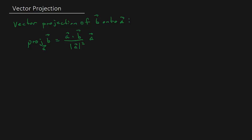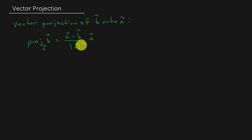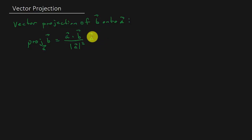What's up everybody? In this video, we're going to look at finding the vector projection of B onto A. So the vector projection of B onto A — this is the notation we use — it's the dot product of A and B divided by the magnitude of A squared, times vector A.